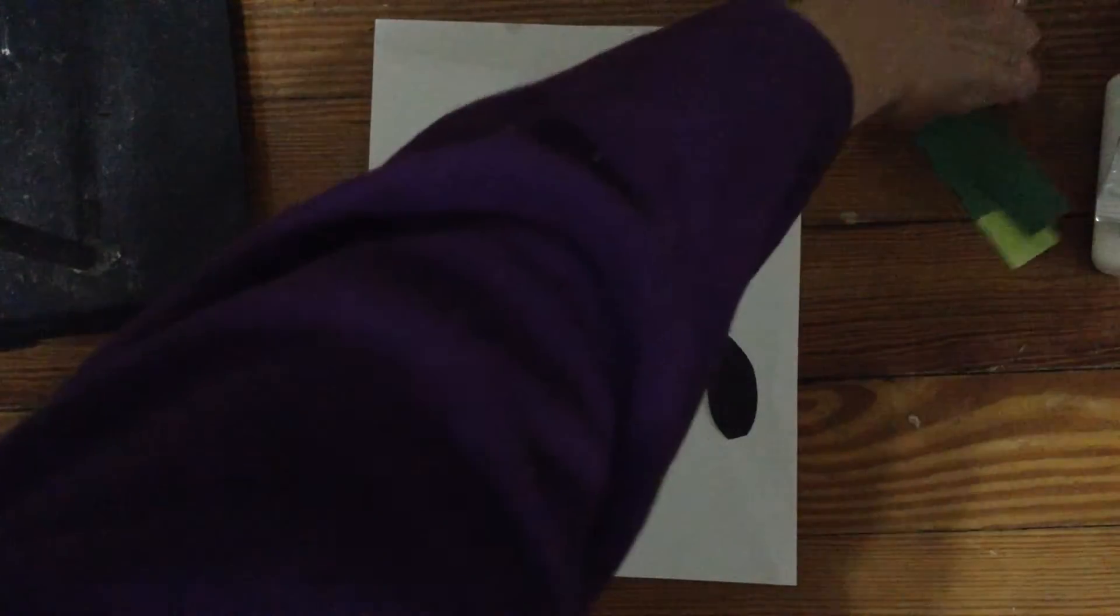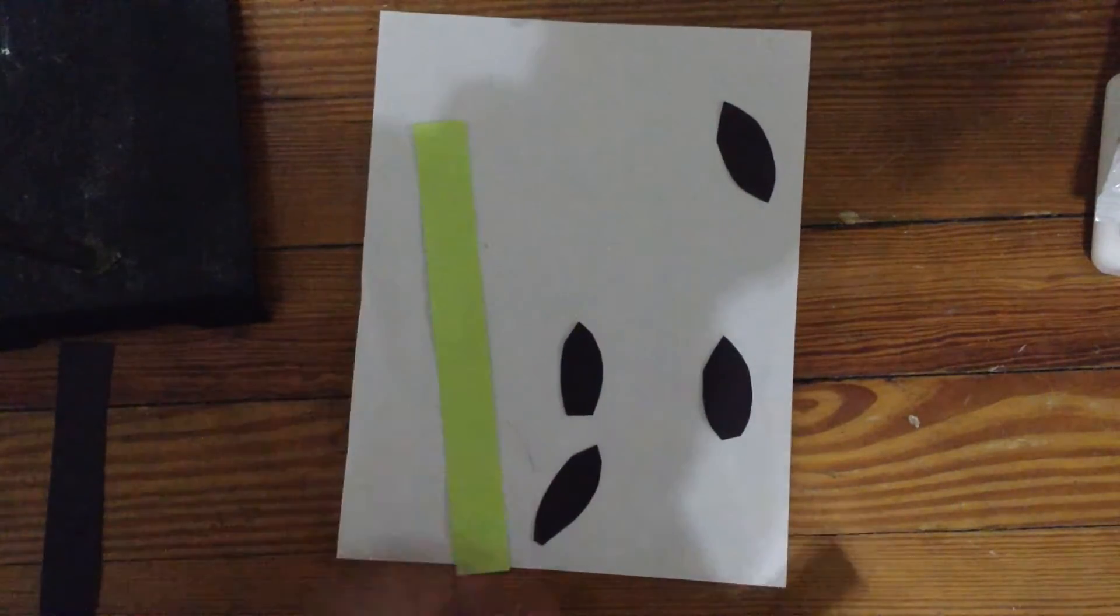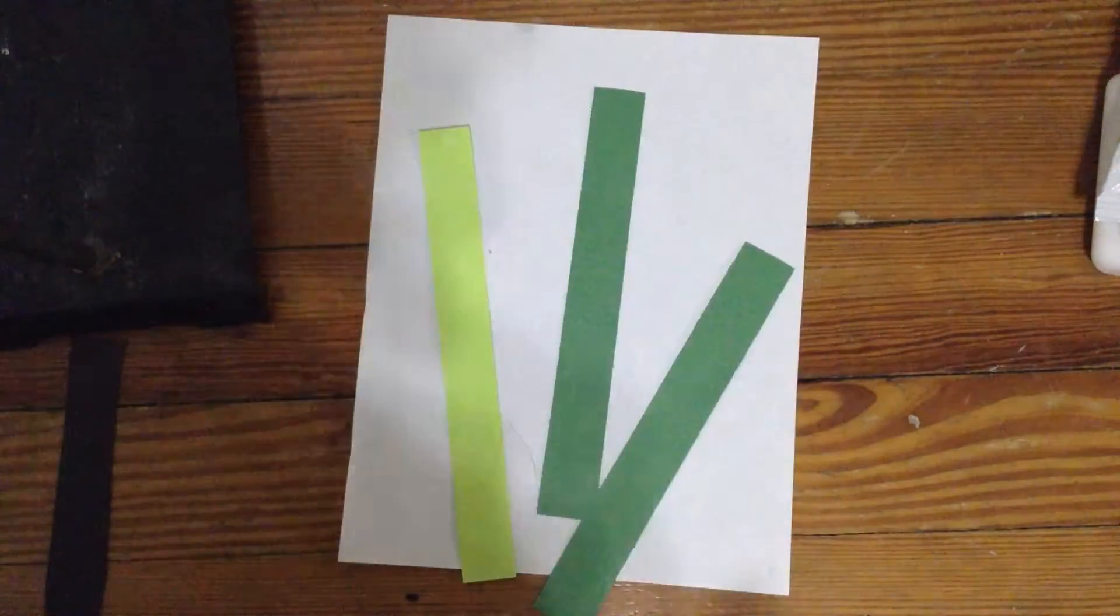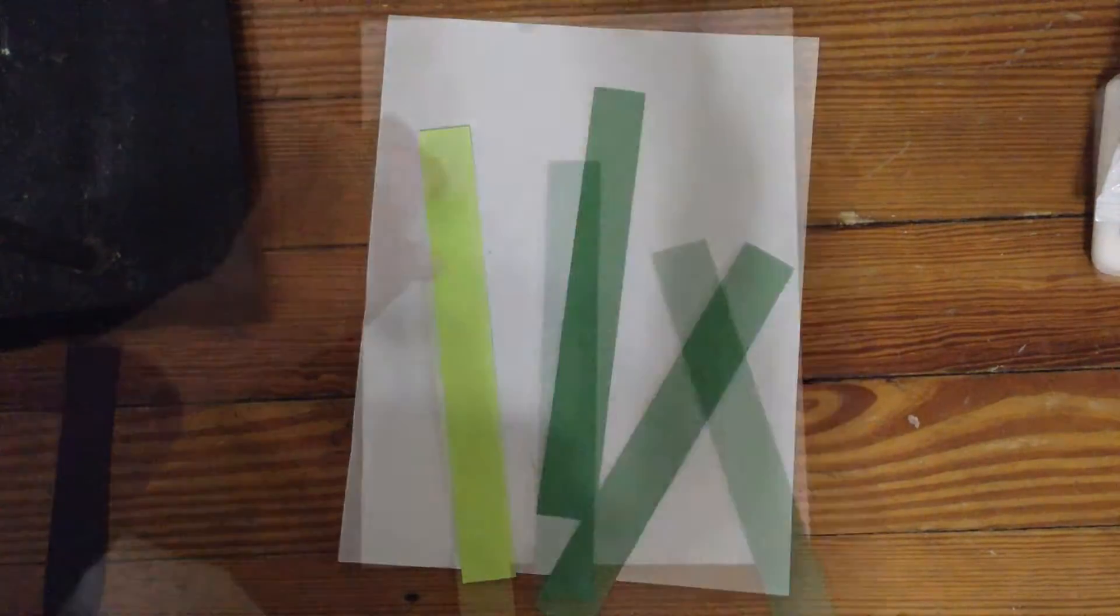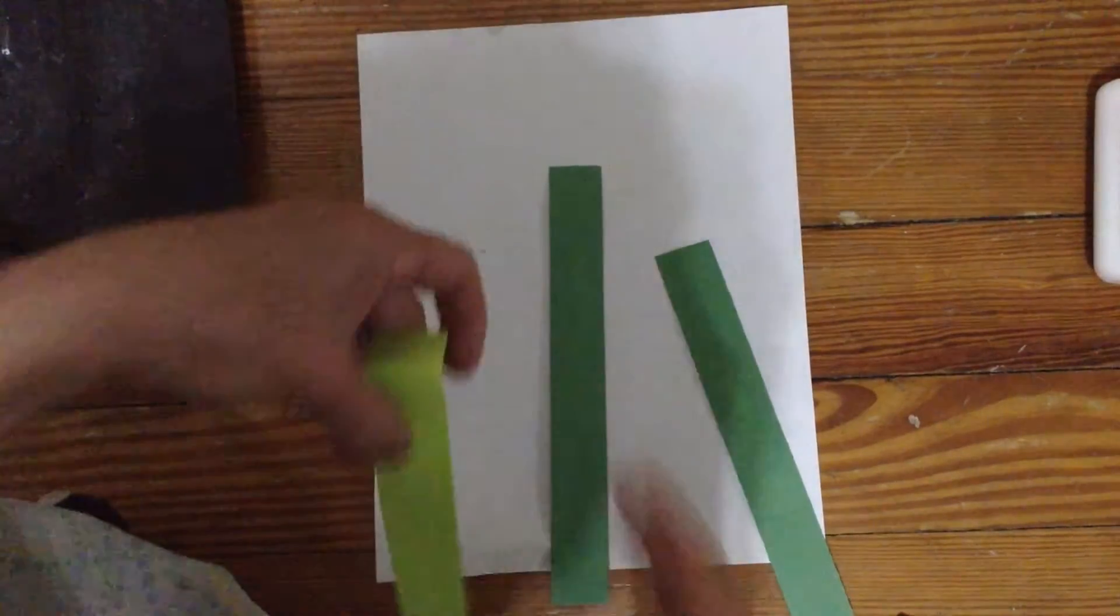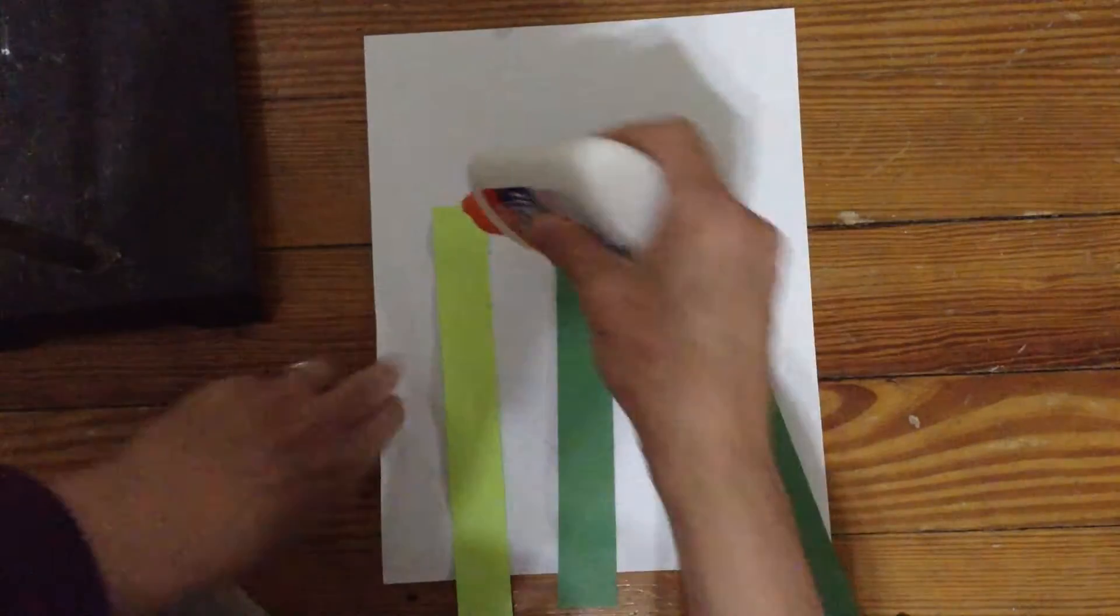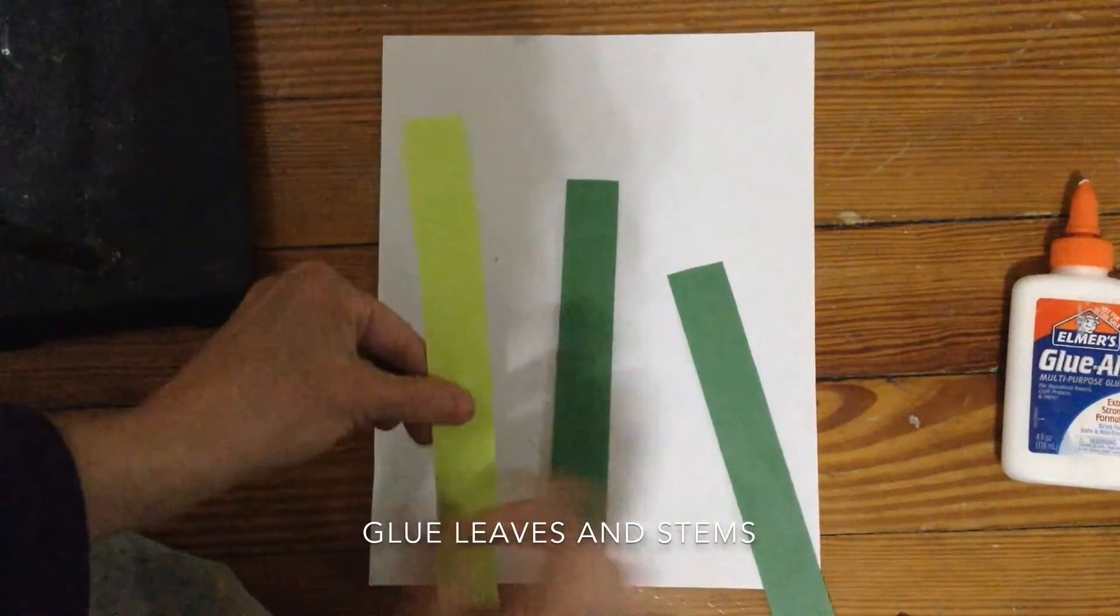So I do have these green stems which I'm gonna glue down. And you can make them different lengths, but make sure you leave room on the top for the flowers. So I'm going to put little dots of glue, so the glue doesn't ooze out and get all over and look messy.